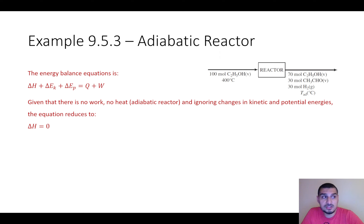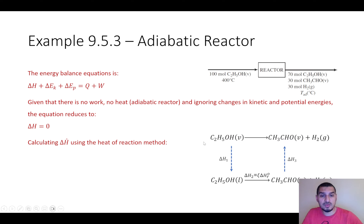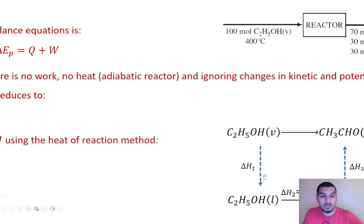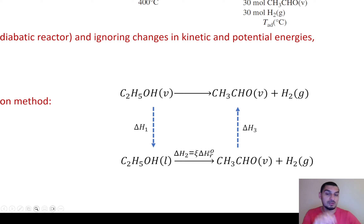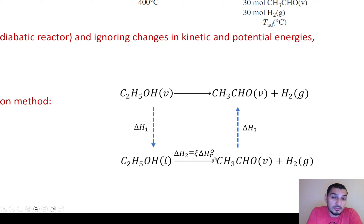Delta H will be calculated using the heat of reaction method. We have ethanol vapor producing acetaldehyde and hydrogen. We follow the hypothetical path where ethanol is dehydrogenated at standard conditions — delta H here is the extent of reaction multiplied by the standard heat of reaction. We calculate delta H1, delta H2, and delta H3, and the total delta H is the summation of these three.